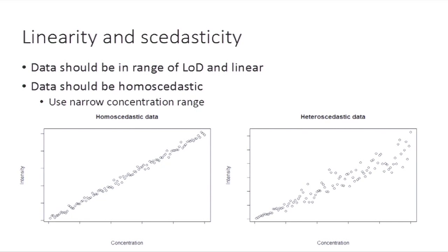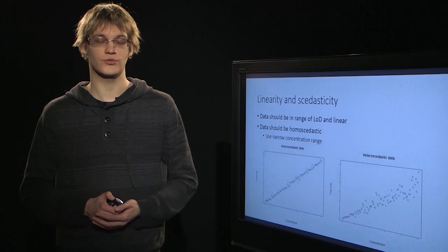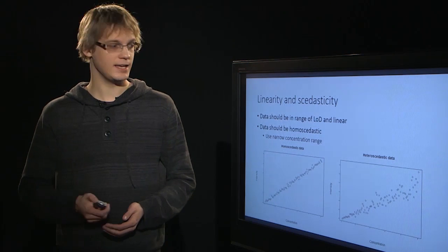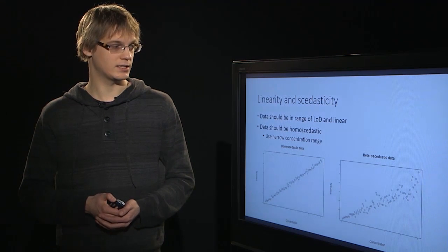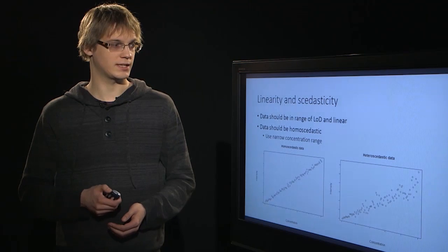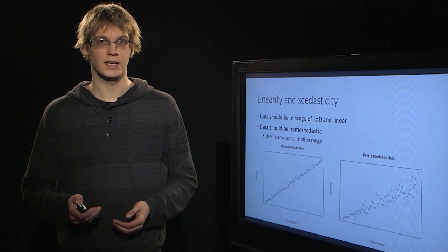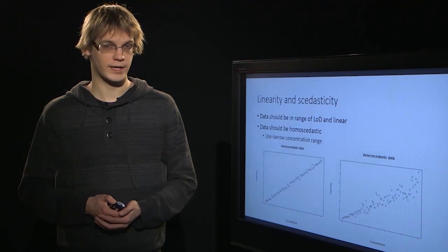This means that as the concentration increases, the variability in the intensity scale should be the same. What we suggest is that you should use quite a narrow concentration range, and in that case it is quite often that homoscedasticity can be assumed correctly.